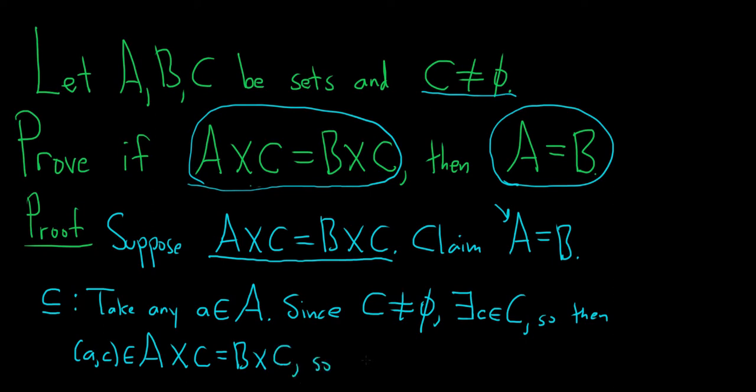So this means that a comma c is an element in B cross C. In particular, this means that little a is in capital B, right? Because the first entry belongs to the first factor of the cross product, direct product, or Cartesian product.